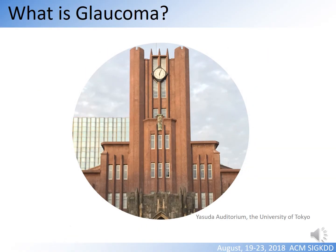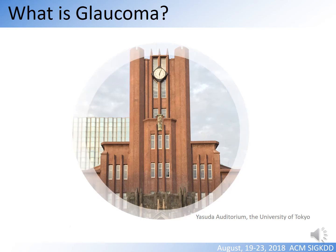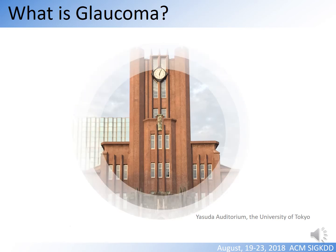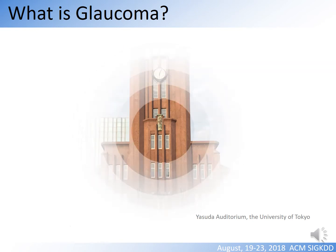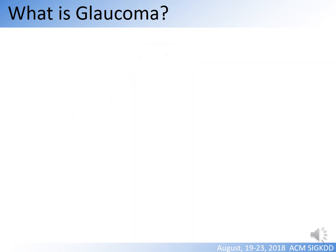Glaucoma is an eye disease that damages both the retinal nerve and function of an eye. Glaucoma causes peripheral vision to start shrinking and can eventually result in permanent loss of sight.